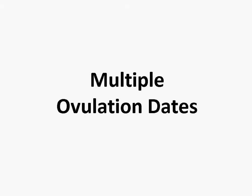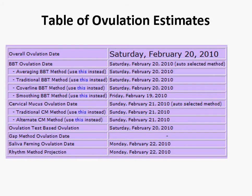Unlike many fertility software products, MyFertilityCharts.com actually gives you multiple ovulation date estimates. These estimates are summarized in a table of ovulation estimates which appears beneath your fertility chart. You'll notice at the top of this table is an overall ovulation date, which summarizes all recorded symptoms and analysis techniques and boils it down to a single ovulation date estimate.